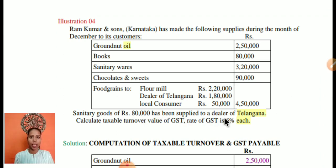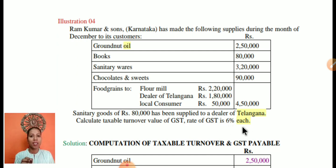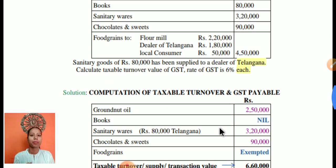Now for the additional information: sanitary goods of rupees 80,000 have been supplied to a dealer in Telangana. Ram Kumar and Son is the supplier situated in Karnataka; the destination is Telangana, so IGST is applicable. Out of the total sanitary ware supply of 3,20,000, only 80,000 goes to Telangana — IGST applies to that 80,000 only. The GST rate is 6% each, meaning CGST 6% and SGST 6% for intra-state, but IGST is 12%.